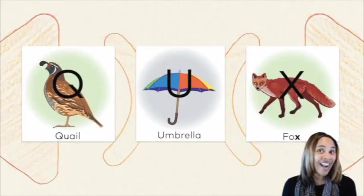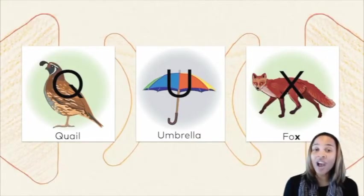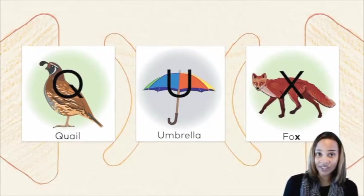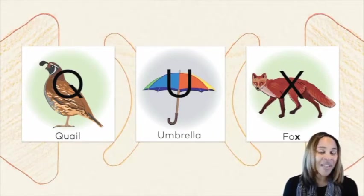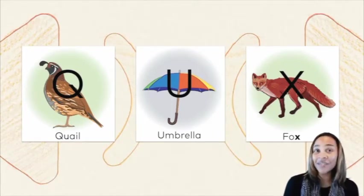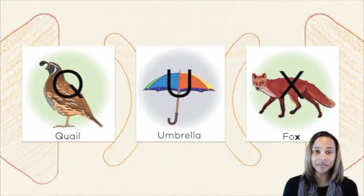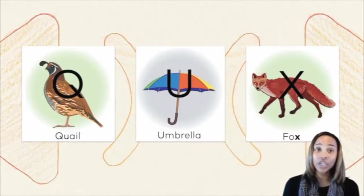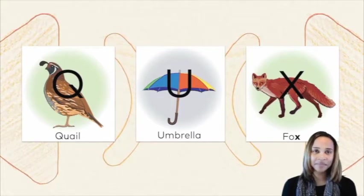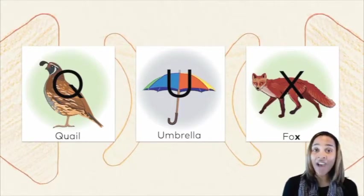Let's say our letter sound chant for all of the new letters that we've just learned. I want you to repeat them after me. Let's start with the letter Q: Q, qua, quail. U, u, umbrella. X, x, fox.